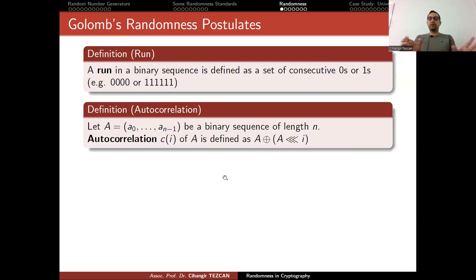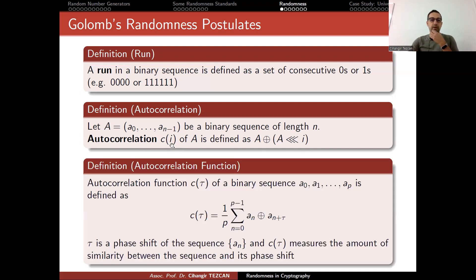Autocorrelation is actually checking the sequence with itself. Assume that you have a sequence A of n bits, so this would be a binary sequence of length n. Autocorrelation CI is actually A XORed with A rotated I bits to the left. So if you check this correlation for every I, then you will check the autocorrelation function.